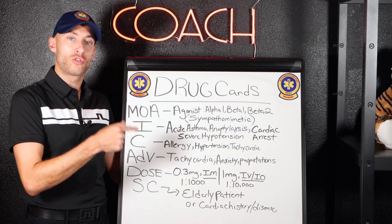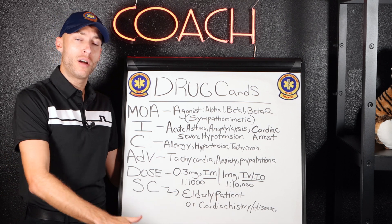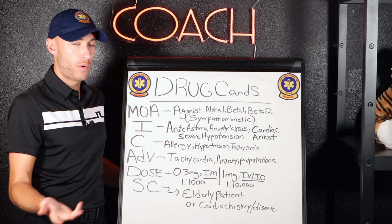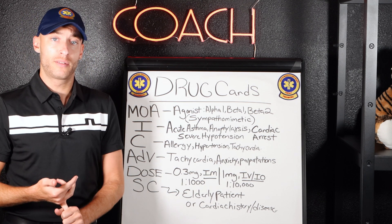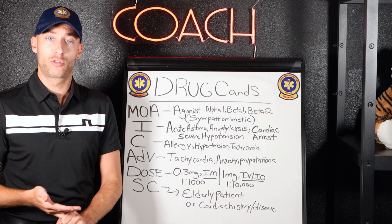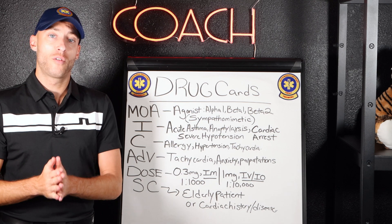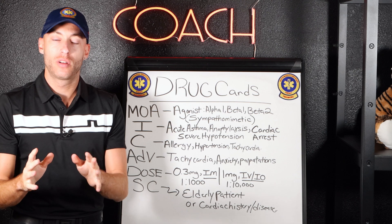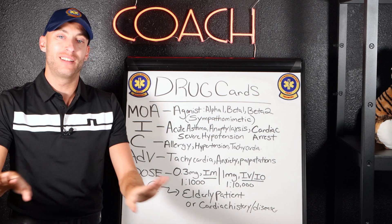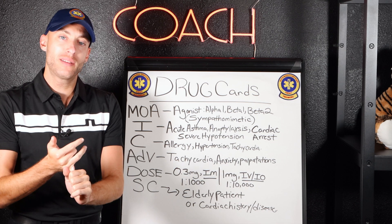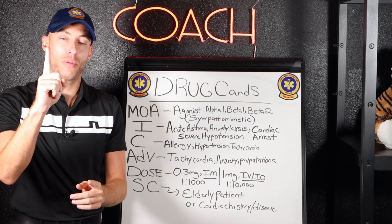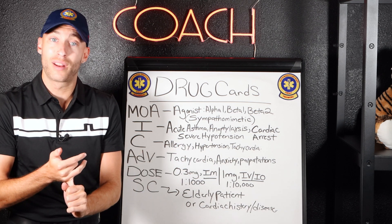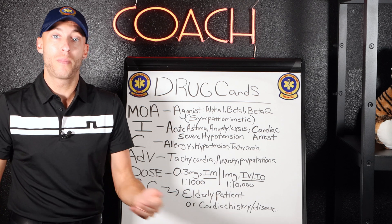Wouldn't it make sense to give this drug to people with severe bradycardia where other drugs haven't worked? So the indications: epinephrine can be used for severe bradycardia as a drip, severe hypotension as a drip, intramuscular for anaphylaxis, acute asthma, and cardiac arrest. For contraindications — obviously allergy — but if we know it increases blood pressure and heart rate, we would not give epi in tachycardia or a hypertensive emergency. That would be hurting our patient.